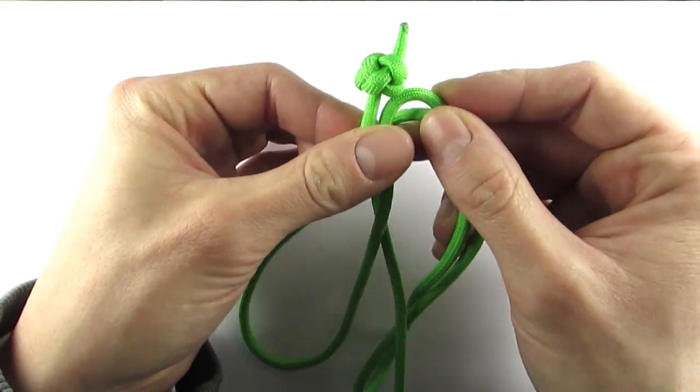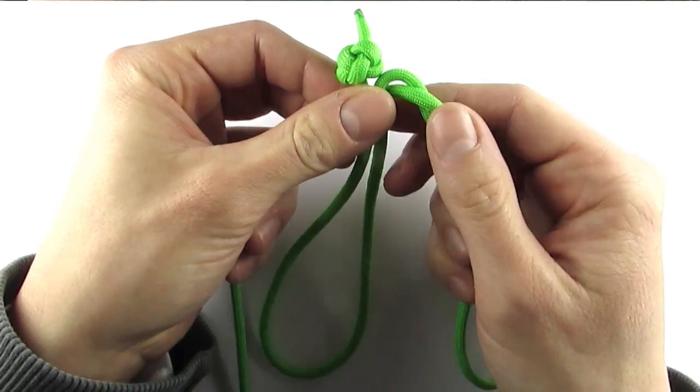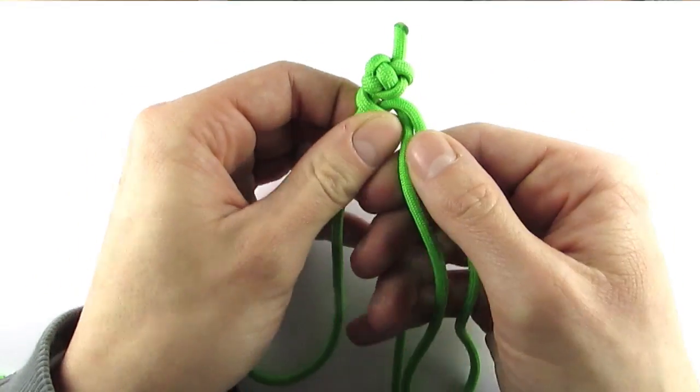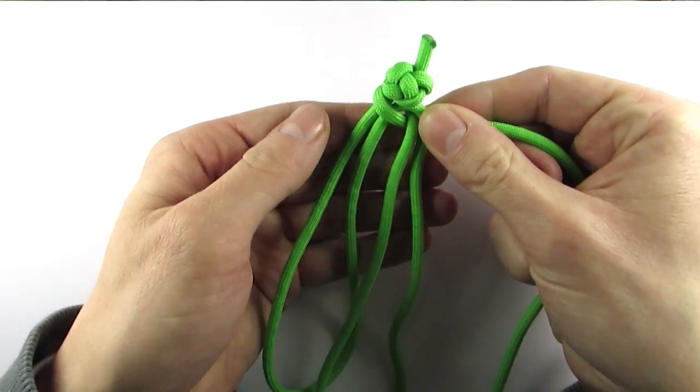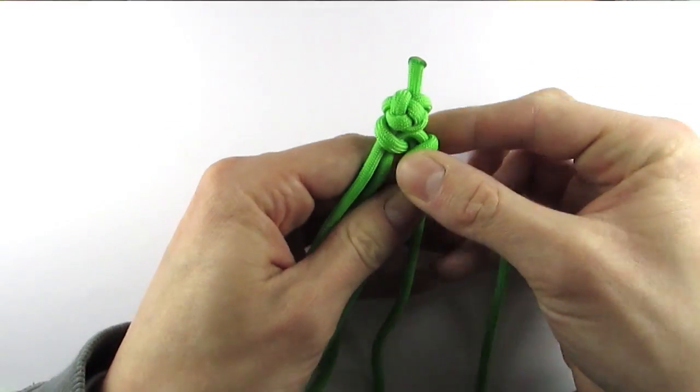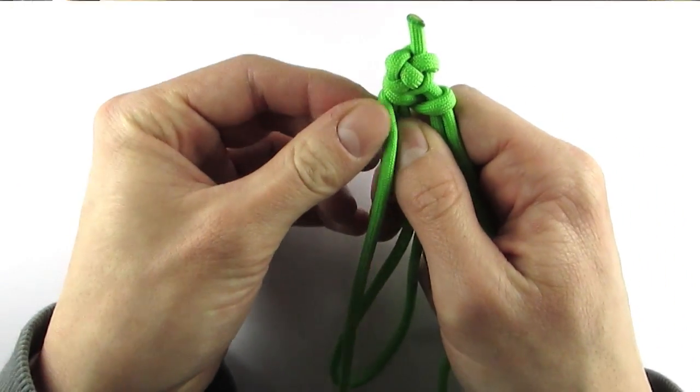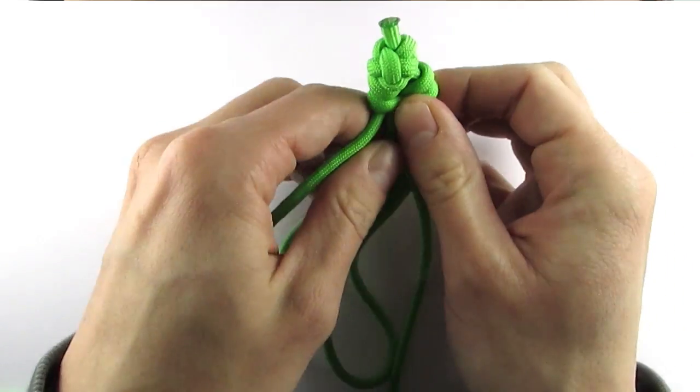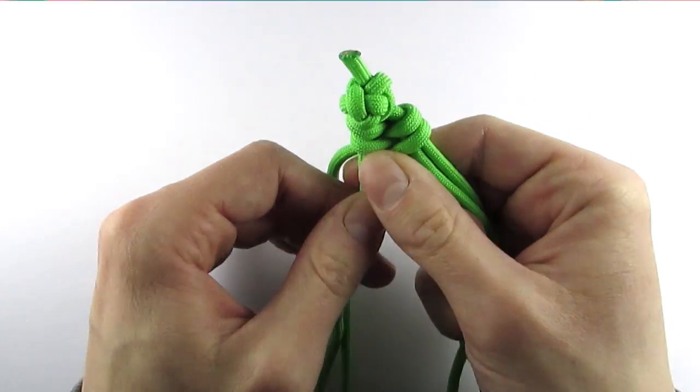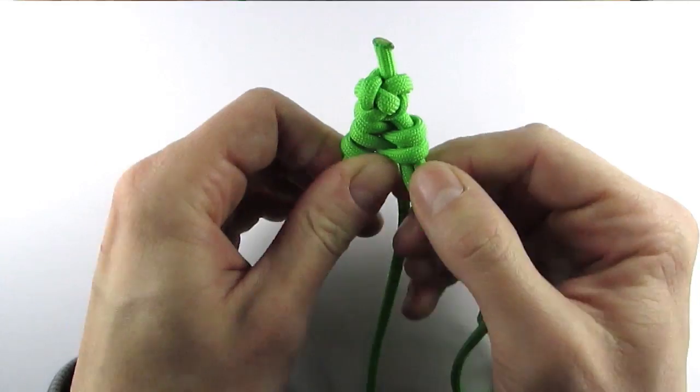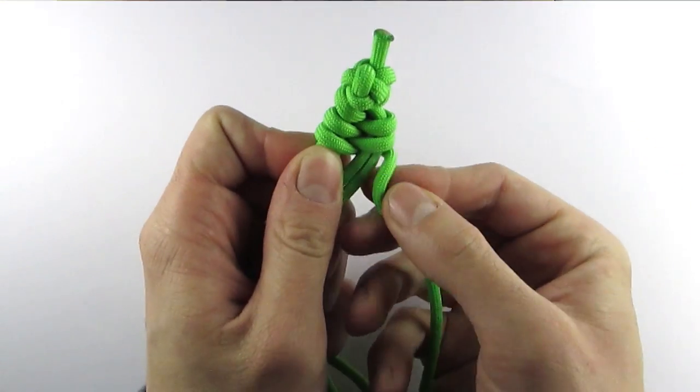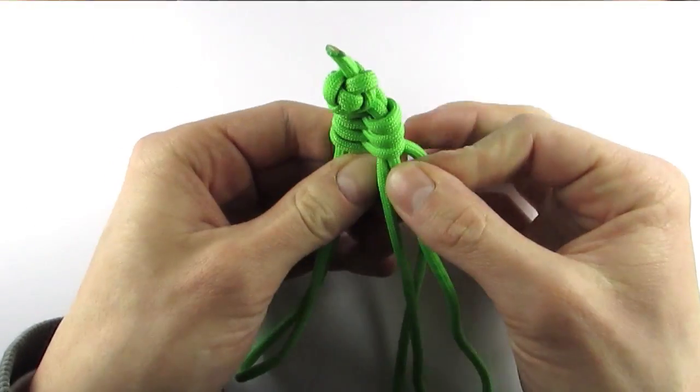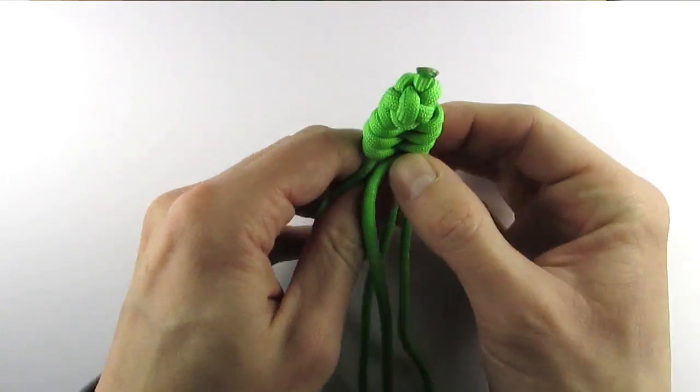These two are basically one, and all we're going to do is go over and under, and then back over and under, repeating this pattern. As you can see, this bracelet is very fast to make.